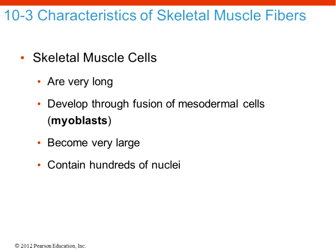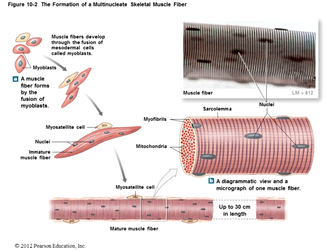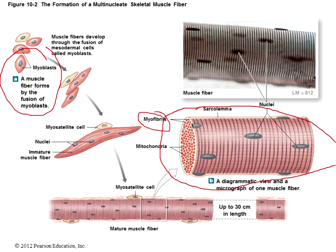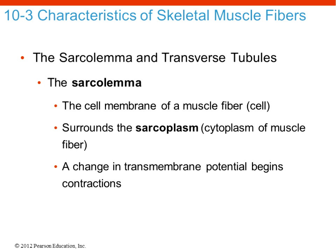Skeletal muscle cells develop from myoblasts — similar to fibroblasts and osteoblasts — which fuse together to ultimately form muscle cells that are typically very long, very large, and have hundreds of nuclei, which is why we call them multinucleate. The muscle cell is made up of myofibrils, and each myofibril contains contractile proteins that give the muscle its striped or banded appearance.